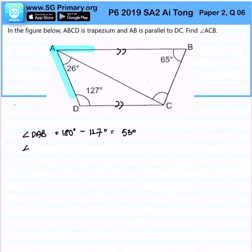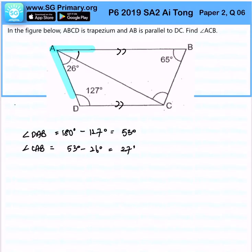Subsequently, angle CAB will be 53 degrees minus 26 degrees, that will be 27 degrees.